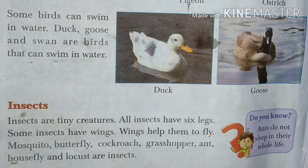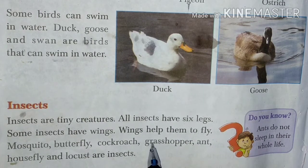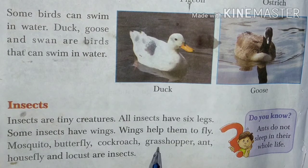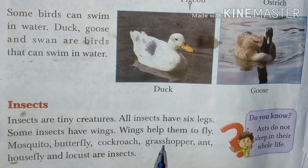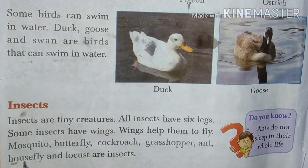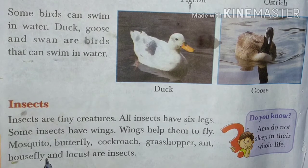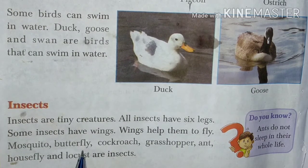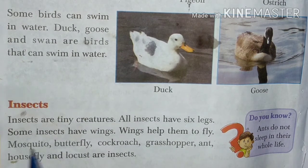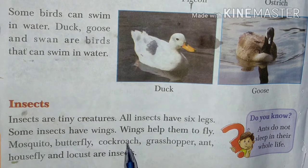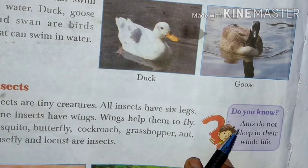Inki pictures mein abhi aapko dikhaaunga. Grasshopper — jo tiddiyan hote hain unko grasshopper kaha jata hai. Ant means cheenti, housefly ka matlab hota hai makkhi. Locust naam ka bhi insect hota hai. Mosquito, butterfly, cockroach, grasshopper, ant, housefly and locust are some names of the insects.